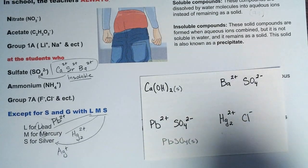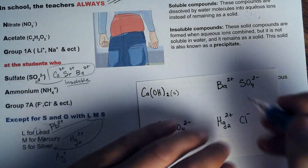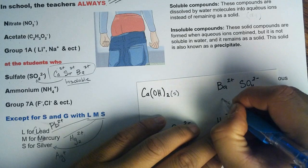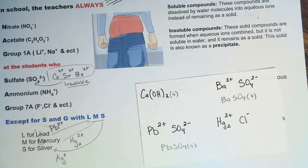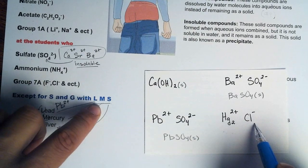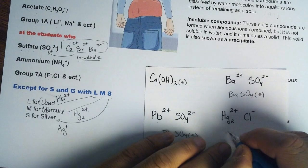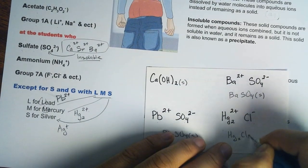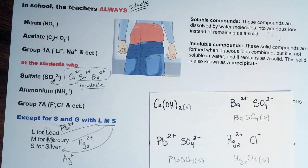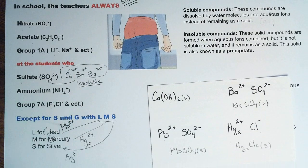What about barium sulfate? We have sulfate and barium — remember, when sulfate bonds with barium, it becomes insoluble, so it is going to become a solid: BaSO4 as a solid. Then we have mercury chloride — chloride is in Group 7A, with the exception of S and G with LMS. Mercury combined with chloride forms a solid, because Group 7A with LMS will become insoluble — Hg2Cl2 as a solid. And that is how you apply the solubility rules, thinking of saggy pants: the teacher will always nag at the student who sags, except for S and G with LMS, and sulfate with calcium, strontium, and barium.